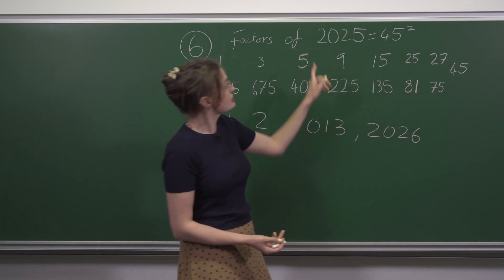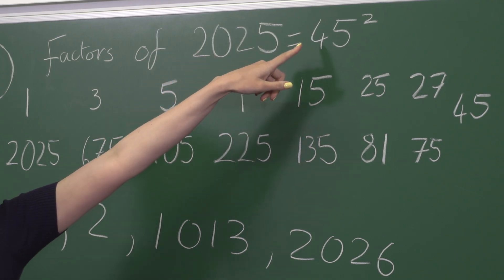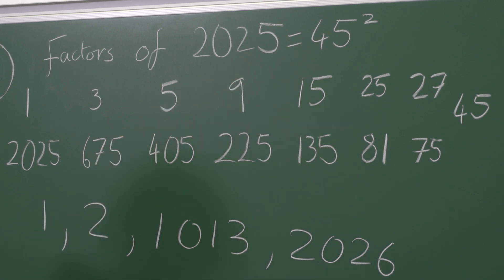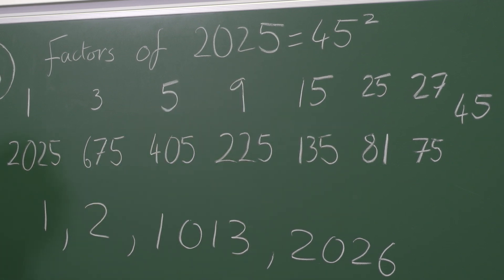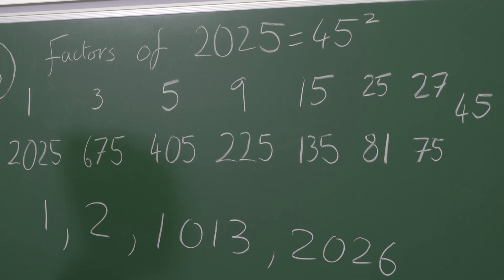This one's alone because 2025 is equal to 45 squared. This immediately tells us that if we have any square of an odd number it's going to satisfy our condition.